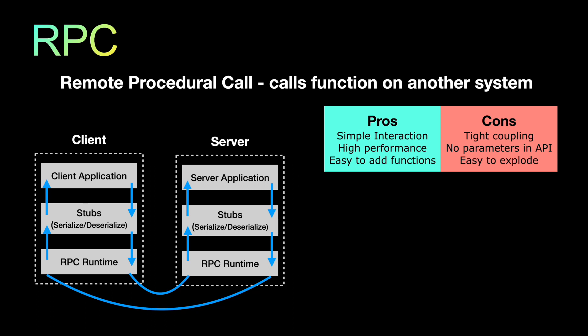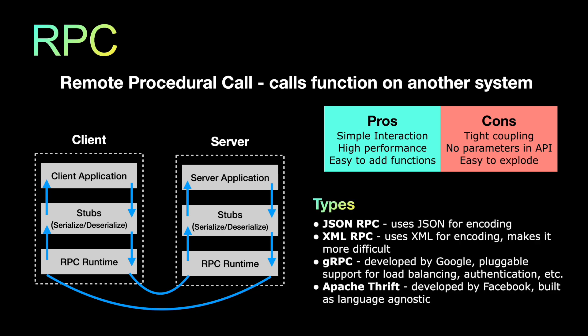There are various implementations of RPC. JSON-RPC and XML-RPC are the two most common — JSON-RPC uses JSON for encoding and XML-RPC uses XML for encoding. More recently, gRPC was developed by Google with pluggable support for multiple features like load balancing and authentication. Apache Thrift was developed by Facebook and its main benefit is that it is language agnostic.